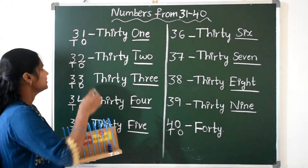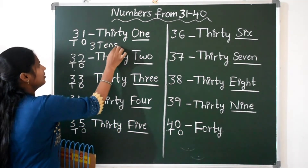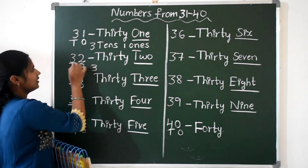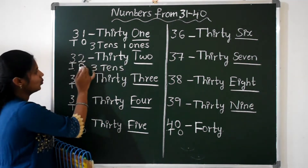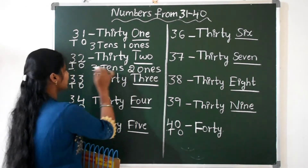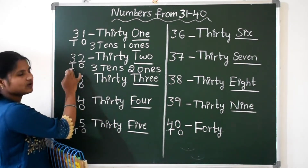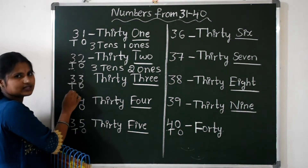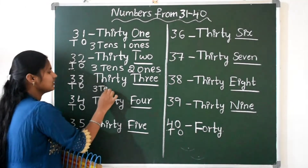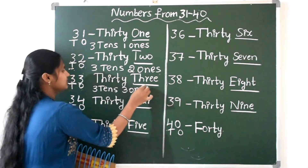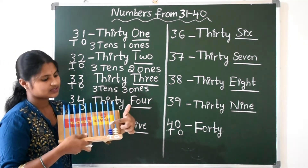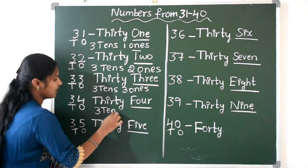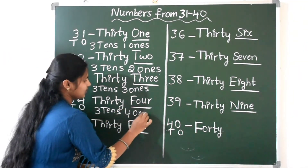Have you understood? In 31, we have 3 tens and 1 one. In 32, we have 3 tens and 2 ones — O means ones, and 2 means 2 ones. In 33: 3 tens and 3 ones. In 34: 3 tens and 4 ones.